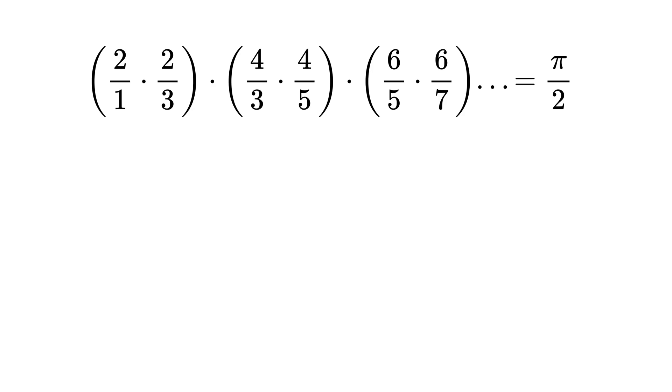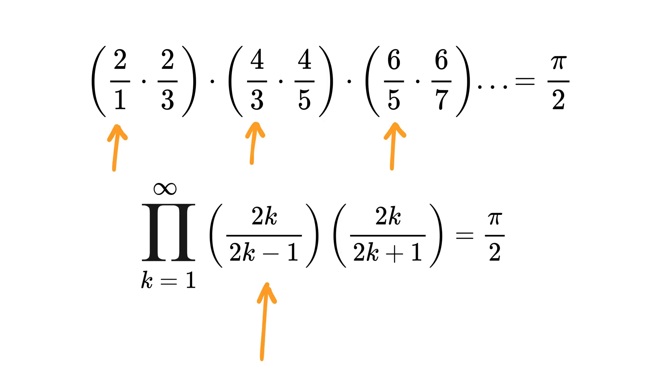If we group the numbers like this, then we can also write the infinite product in a compact form like this, where the left part of the group is of the form 2k over 2k minus 1 and the right part is 2k over 2k plus 1, and k runs from 1 to infinity.